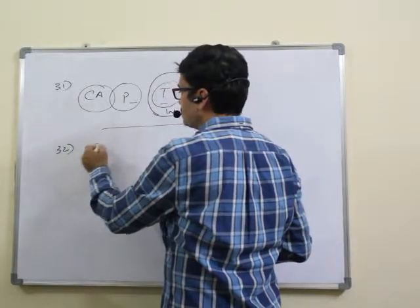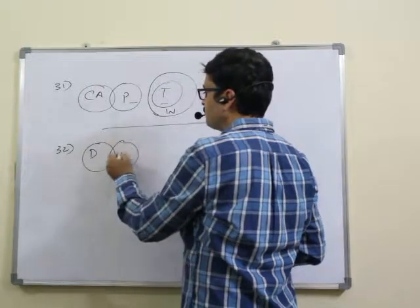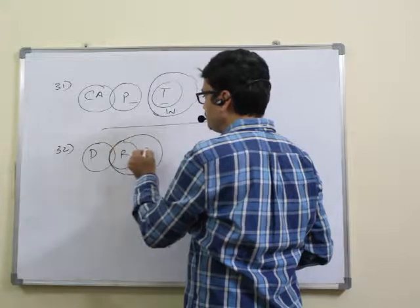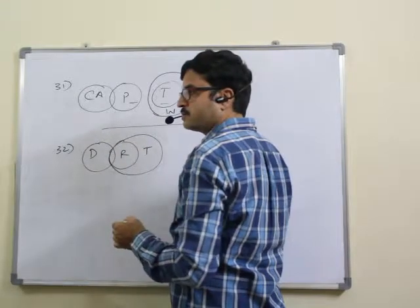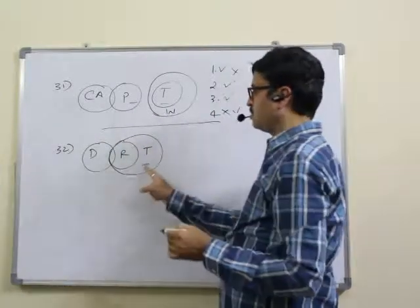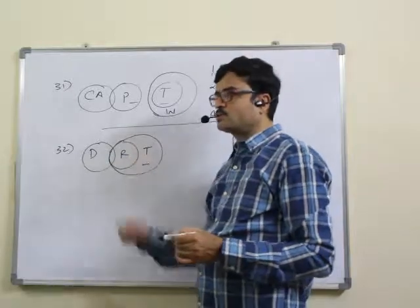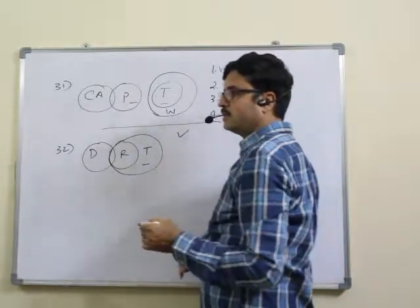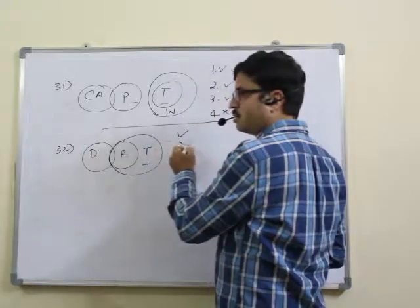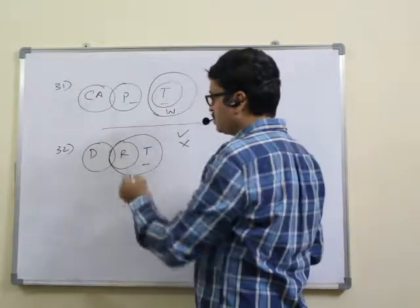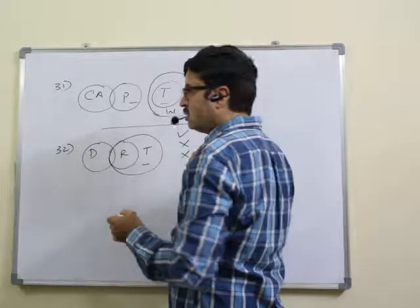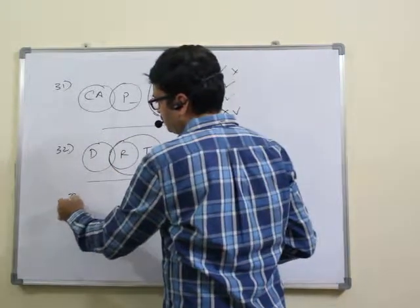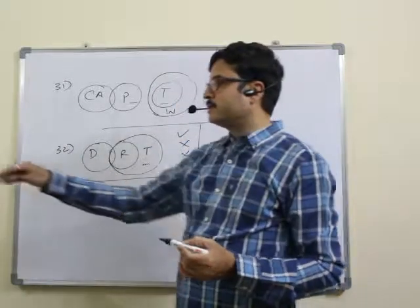Question 32: some dogs are rats, all rats are trees, some trees are not dogs. First: some trees are not dogs — correct. All dogs are trees — wrong. All rats are dogs — wrong. All trees are dogs — wrong. So only one follows. Answer: 32, first option.